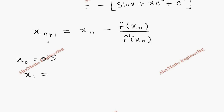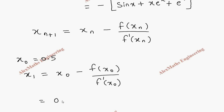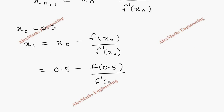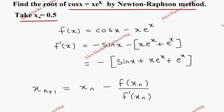Substituting n = 0, we get x1 = x₀ - f(x₀) / f'(x₀). With x₀ = 0.5, this becomes x1 = 0.5 - f(0.5) / f'(0.5).